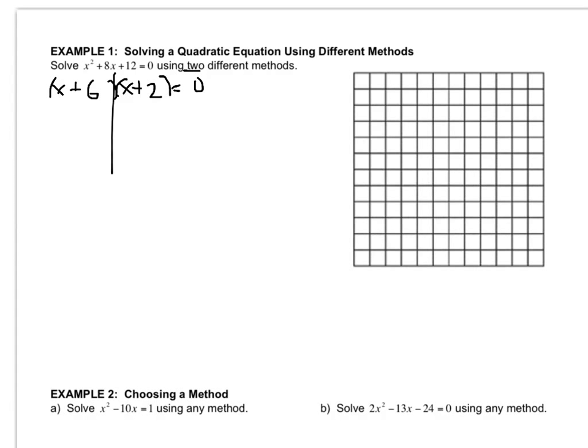So this answer is x equals negative 6, and this answer is x equals negative 2. See how quick that was? When it's factorable, it's a piece of cake.